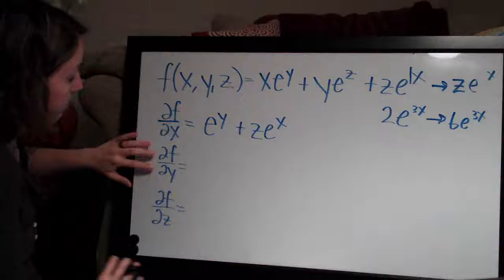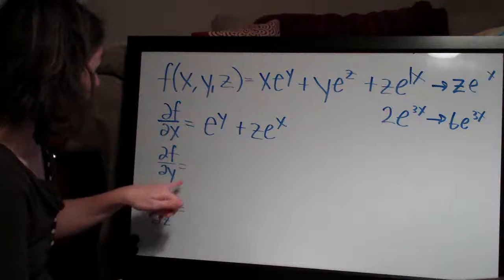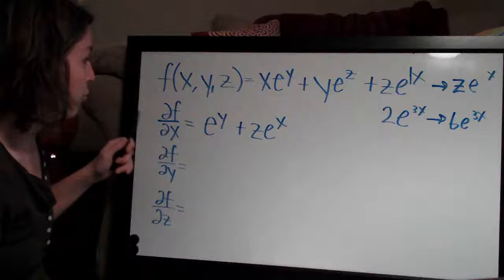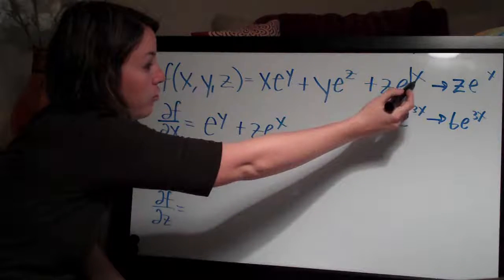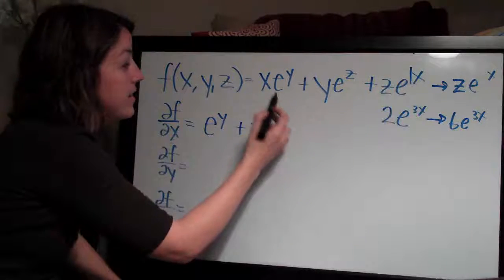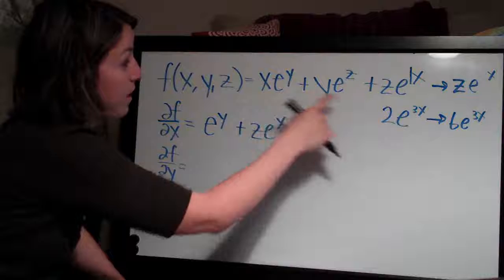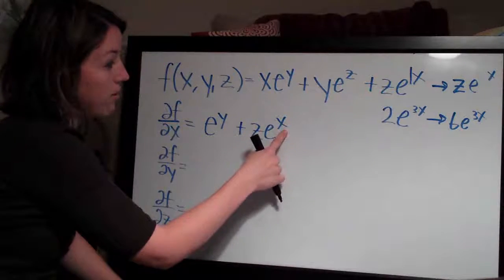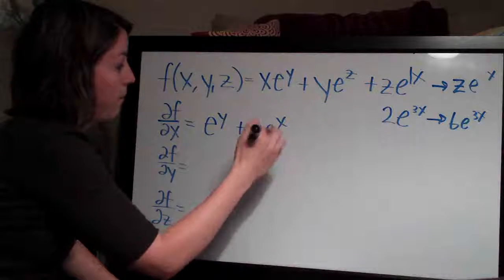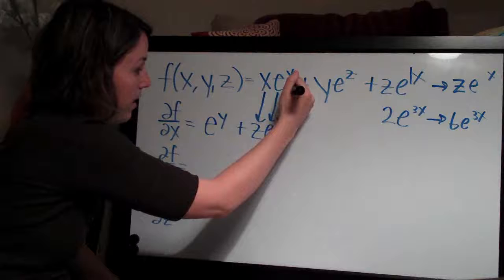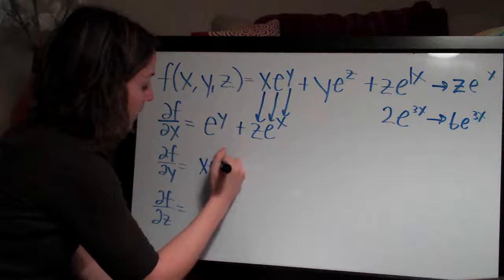Now let's do the partial derivative with respect to y, going term by term. For the first term x e to the y: when we took the derivative with respect to x, the x was the exponent on e, and z was the coefficient — that term came straight down unchanged. Now y is the exponent on e and x is the coefficient, so it's in the same exact form. That's going to stay exactly the same: x e to the y.